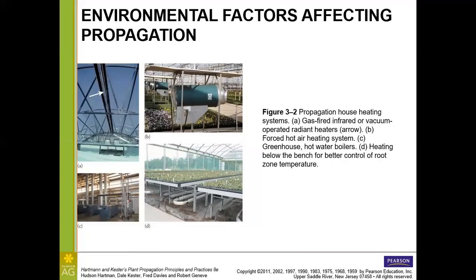Here we have a couple of different heating systems, starting with the gas-fired radiant heater, which you can see is running across the top of the truss on the top left figure. We have a forced air heating system, which is actually blowing and forcing the hot air into the environment. On the lower right at C, a greenhouse that is equipped with its own hot water boilers. And on D here, we can see potentially where that hot water is headed, which is for below-the-bench heating.